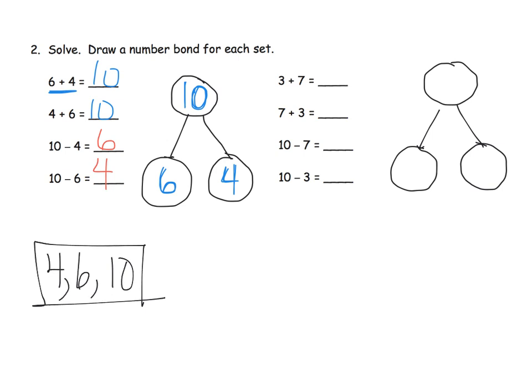All right, let's try this over here. So we've got three and seven. Well, let's solve that. We can see that three and seven equals ten. That means seven and three also equals ten.